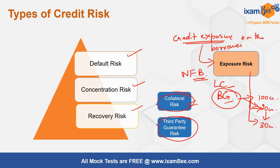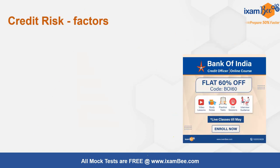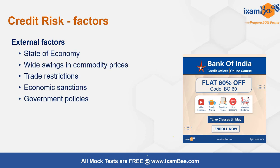So those are the various types of credit risk that a bank may face. Now, what are the factors that can lead to credit risk? There can be external and internal factors. The external factors are those which are out of the control of the bank — we are talking from the point of view of the bank as the lender. External factors are those which are out of the purview of the bank.